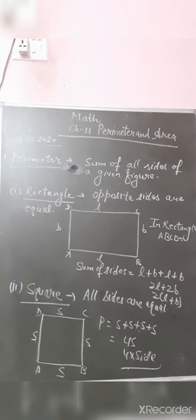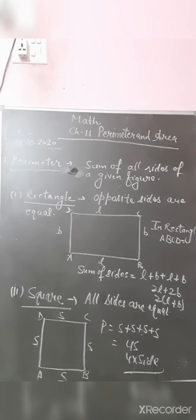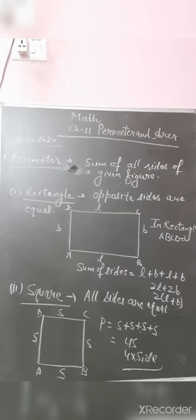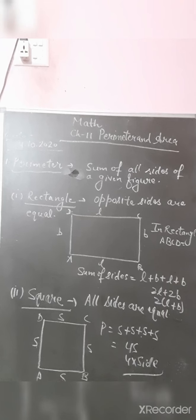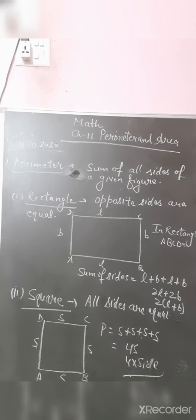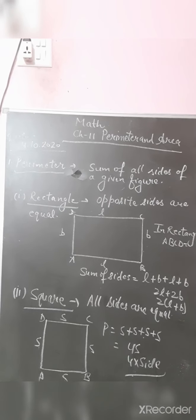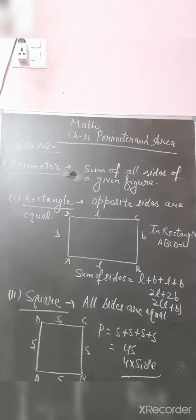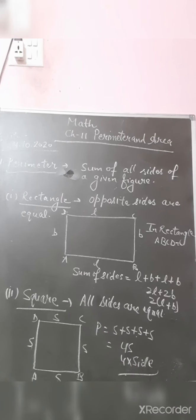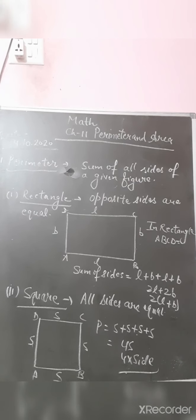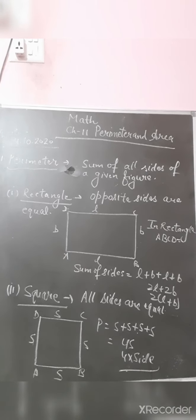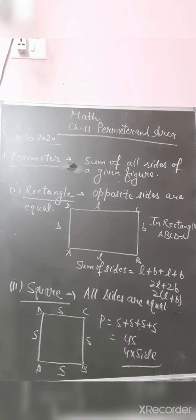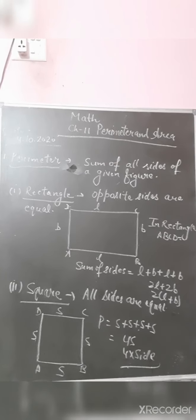First of all we will talk about the rectangle. All of you know that in a rectangle, opposite sides are equal. I have drawn one rectangle here and given it the name ABCD. In rectangle ABCD, all of you know that there are two lengths and two breadths. I have denoted length with l and breadth with b, so there are two l's (opposite sides) and two b's.